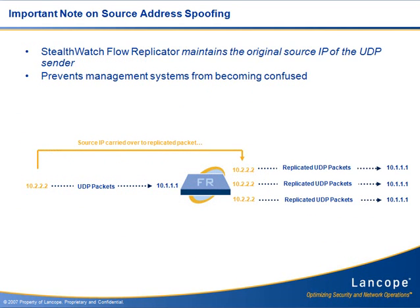The most important concept to understand about the StealthWatch Flow Replicator is that it maintains the original source IP of the UDP sender. When the UDP datagrams are retransmitted from the Replicator, they are not sent from the IP of the Replicator, but rather the IP of the original sending host. The management system receiving the UDP messages will never even know the Replicator was involved.